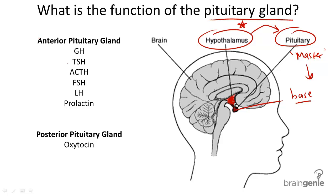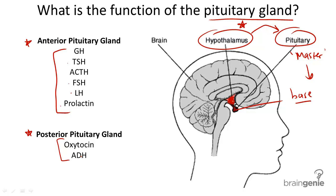The pituitary gland is divided into two major lobes: the anterior and the posterior lobe. The anterior lobe makes and secretes six different hormones: growth hormone, thyroid stimulating hormone, adrenocorticotropic hormone, follicle stimulating hormone, luteinizing hormone, and prolactin. The posterior pituitary gland makes and secretes oxytocin and antidiuretic hormone.